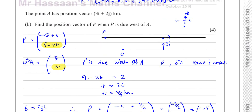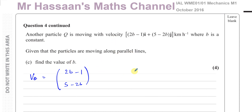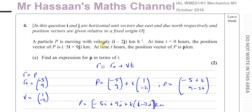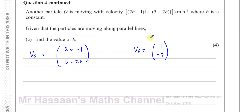Now moving on to part (c). Another particle Q is moving with velocity (2b minus 1)i plus (5 minus 2b)j. So the velocity of Q is the vector (2b minus 1, 5 minus 2b) — those are the i and j components. Given that the particles are moving along parallel lines, find the value of b. This means the velocities of P and Q are parallel to each other. The velocity of P is i minus 2j, or (1, minus 2).